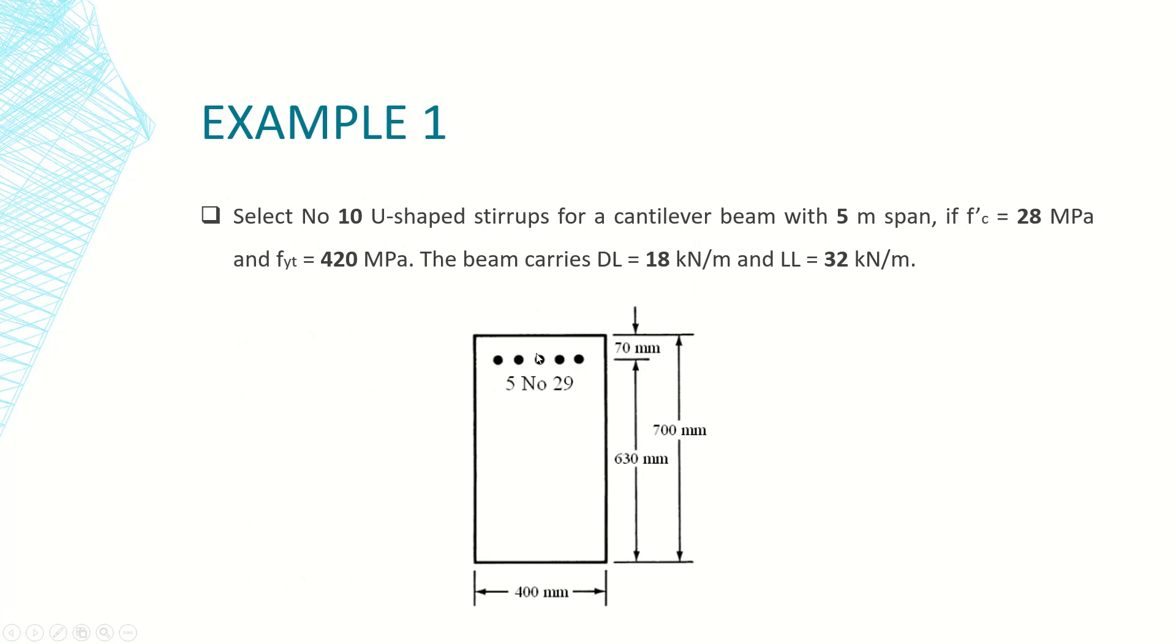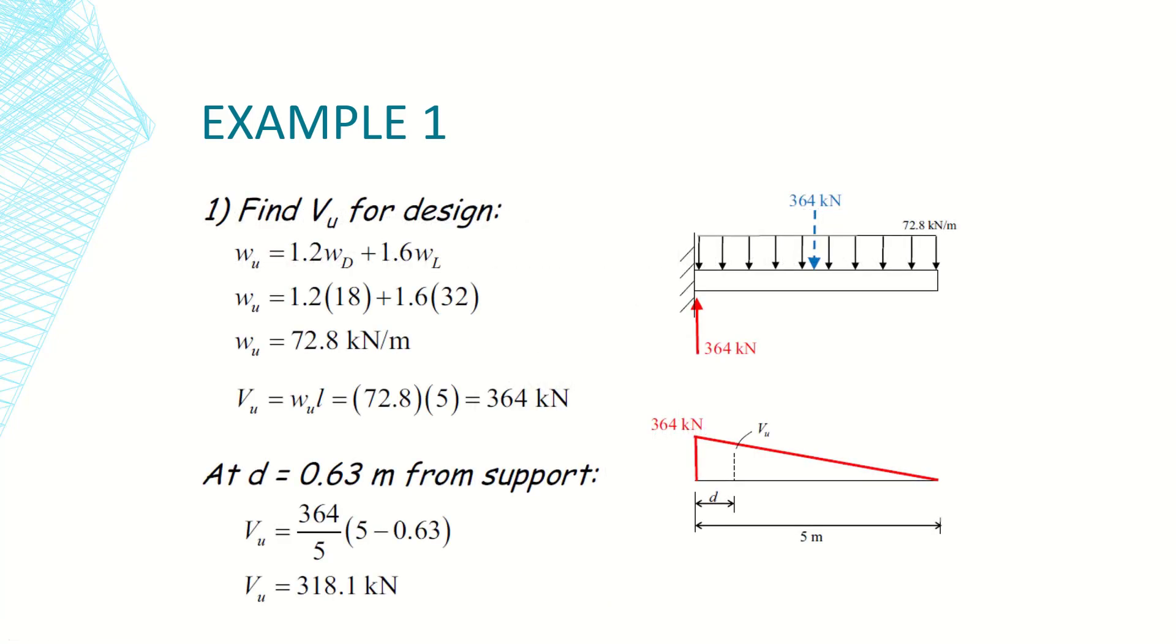The first step is to determine the shear value for design. We have this cantilever beam with uniformly distributed load. We use the combination that combines dead and live from ACI code which is 1.2 dead plus 1.6 live.